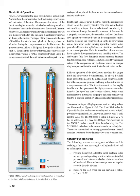In a properly serviced strut, the extension stroke occurs at the end of the compression stroke. Energy stored in the compressed air in the upper cylinder causes the aircraft to move upward in relation to the ground as the strut tries to rebound. Fluid is forced back down into the lower cylinder through restrictions and snubbing orifices. The snubbing of fluid flow during the extension stroke dampens the strut rebound and reduces oscillation caused by the spring action of the compressed air. A sleeve spacer or bumper ring incorporated into the strut limits the extension stroke.